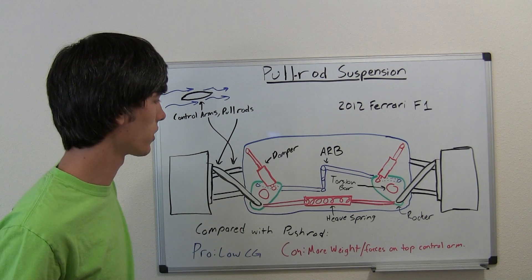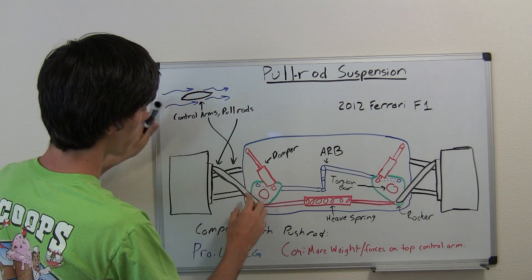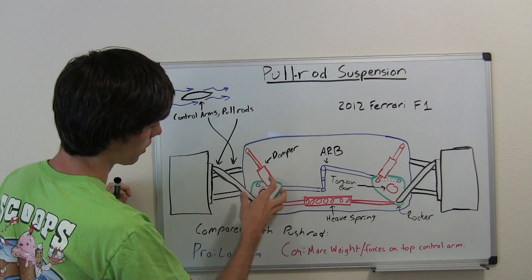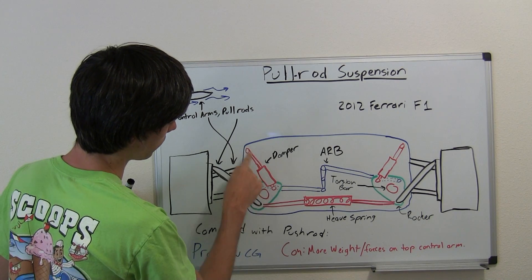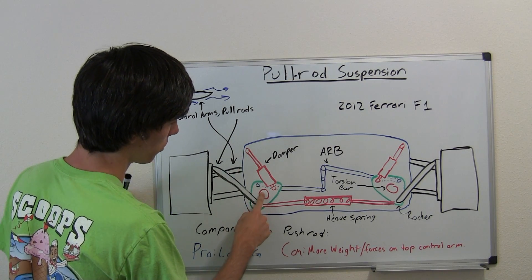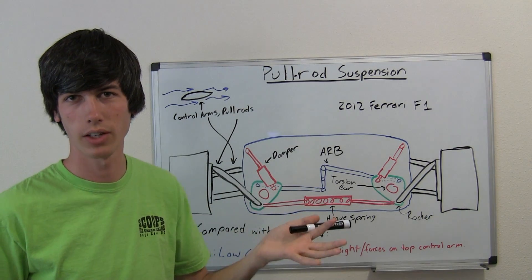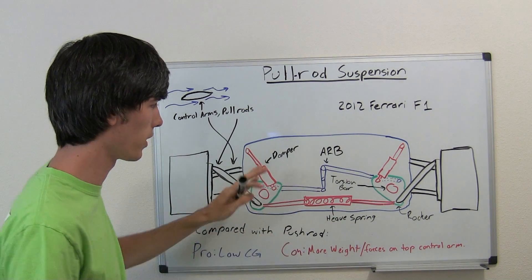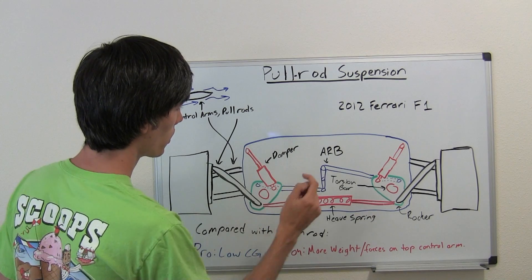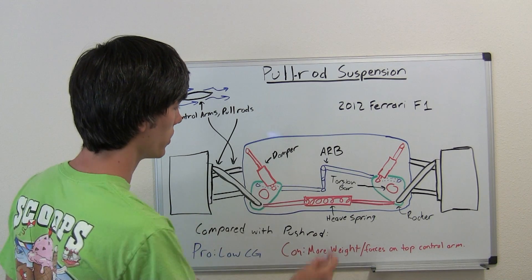So it works basically the same as the other. As the tire goes up it rotates this rocker, so then you've got the damper resisting that, you've got the torsional spring resisting that. Now remember, if you don't understand this, just watch the video on push rods, it explains all these in greater detail. You've got the anti-roll bar and you've got the heave spring.